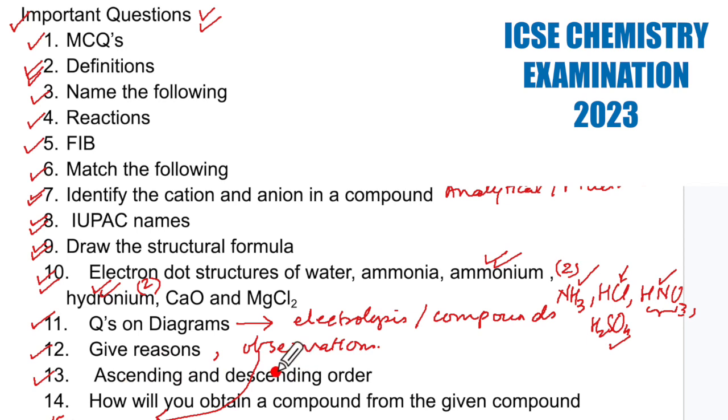Now 13th one is ascending and descending order. Now this goes for the periodic table. The periodic properties which are there, the atomic size, then ionization potential, electron affinity, electronegativity, then we have the metallic character and the non-metallic character, the atomic size also. Just know what are the trends for these across the period and down the group and that will be a very sure short question to answer.